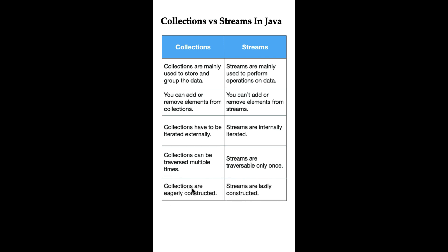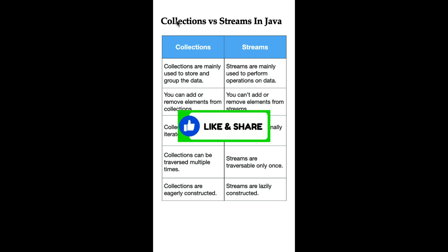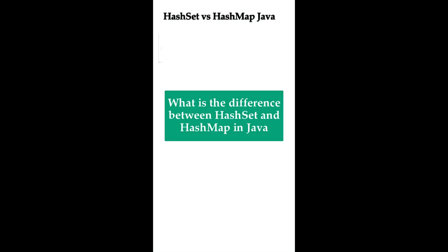Collections can be traversed multiple times, whereas Streams are traversable only once. Collections are eagerly constructed — all elements are computed at the beginning — but Streams are lazily constructed, meaning internal operations are not evaluated until a terminal operation is invoked.